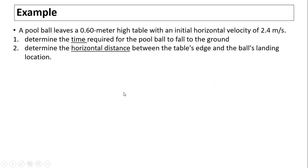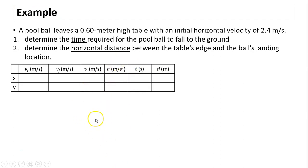Take a look at this example. A pool ball leaves a 0.60-meter high table with an initial horizontal velocity of 2.4 meters per second. Part A: determine the time required for the pool ball to fall to the ground. Part B: determine the horizontal distance between the table's edge and the ball's landing location. Make a chart and write down what is given: horizontal speed is 2.4, horizontal acceleration equals zero. Since the ball is launched horizontally, initial vertical speed equals zero, vertical acceleration is negative 9.81, and vertical displacement is negative 0.60 meters.